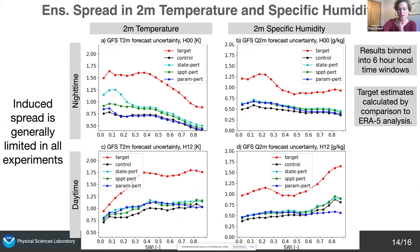For completeness, looking at the ensemble spread in two-metre temperature and specific humidity for each experiment: they're not adding nearly as much spread as wanted — the target estimate in red shows everything is still very under-dispersed.